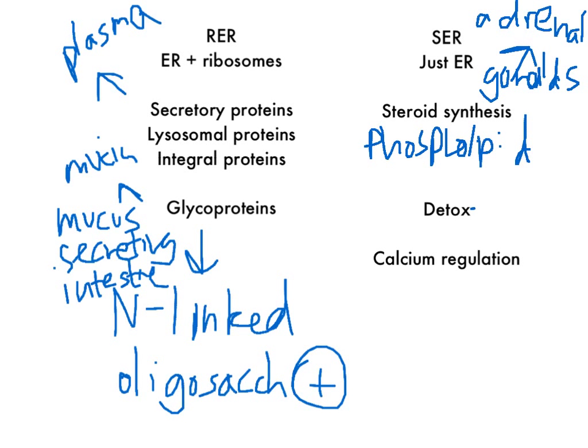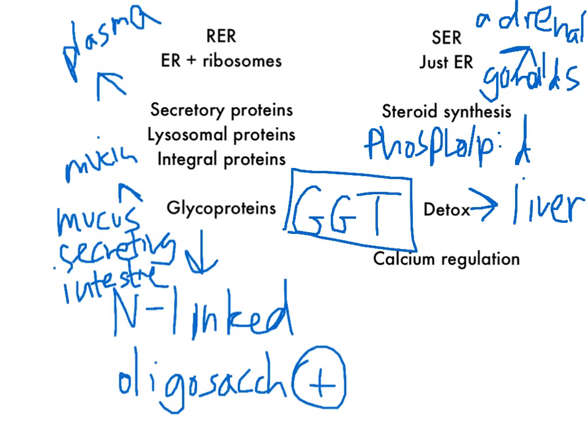What's a cell that has a lot to do with detox? That's the liver hepatocyte, so we know the liver hepatocyte is going to be rich in SER. Some of the CYP enzymes are microsomal, meaning they're in the SER. Going back to GI pathology, GGT is a microsomal enzyme found in the SER that we associate with alcohol abuse or drug abuse — you'll see it increase when the CYP450 system is induced.